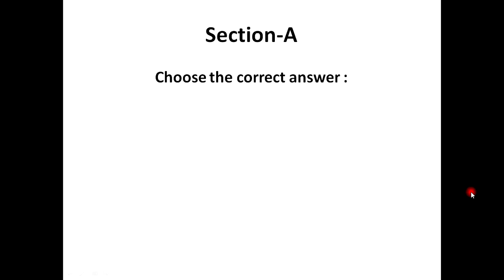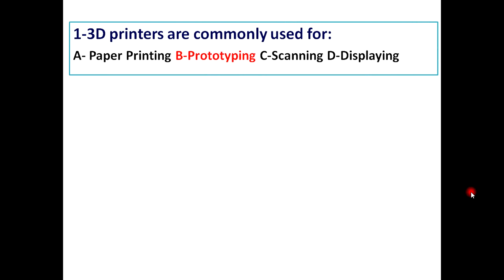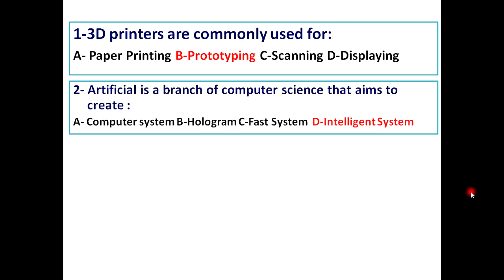The first one is: 3D printers are commonly used for A - paper printing, B - prototyping, C - scanning, and D - displaying. The correct answer is prototyping. Just consider the red one is the correct answer.